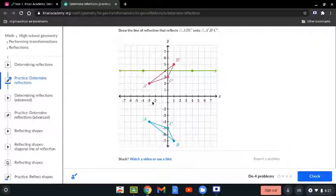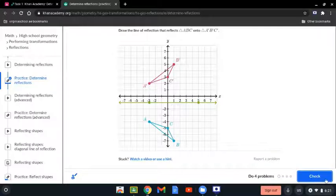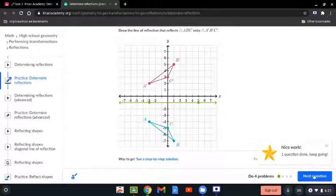So 1, 2, 3. And here is the line that's in the middle of between both figures. So we're going to put it here, and we're going to check the answer. That is correct.